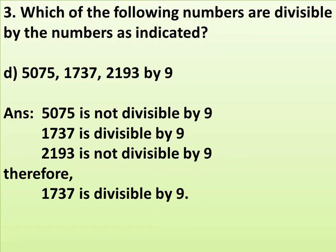For part d, the divisibility rule for 9 is: if the sum of the digits of any number is divisible by 9, then the number will also be divisible by 9. Checking 5075: 5 + 0 + 7 + 5 = 17, which is not divisible by 9, so 5075 is not divisible by 9. For 1737: divisible by 9. For 2193: not divisible by 9. Therefore, 1737 is divisible by 9.